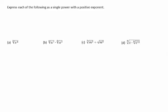Express each of the following as a single power with a positive exponent. To express a radical as a power, recall that x raised to the m over n is equal to the nth root of x to the m, or the nth root of x, all raised to the m. Note that the index of the radical corresponds to the denominator of the exponent when written as a power.